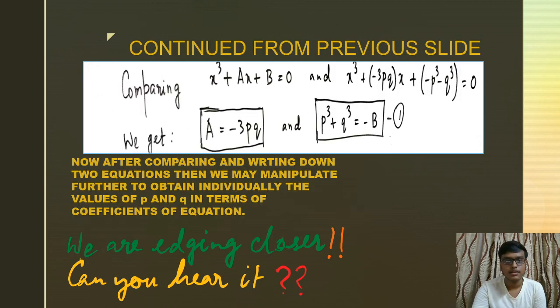Continued from previous slide, comparing the above two equations I get a = -3pq and p³ + q³ = -b. Now after comparing and writing down the two equations we may manipulate further to obtain individually the values of small p and small q in terms of coefficients of equation. We have obtained two equations in two unknowns so we are ready to solve them.